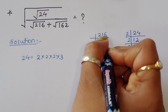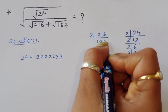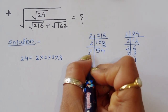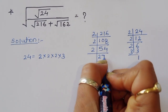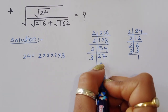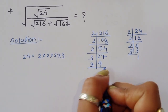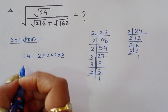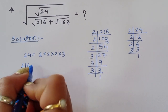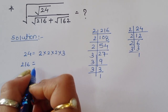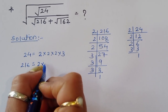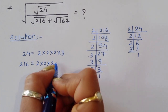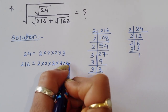For 216, we find the prime factorization. We get 2 times 2 times 2 times 3 times 3 times 3. So the factor of 216 is equal to 2³ times 3³.